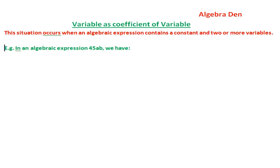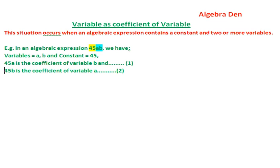For example, in an algebraic expression 45ab, we have variables a and b and constant 45. 45a is the coefficient of variable b, mark this statement as 1. 45b is the coefficient of variable a, mark this statement as 2. Now from statements 1 and 2, we can learn that a coefficient can also have a variable.